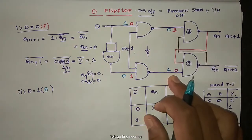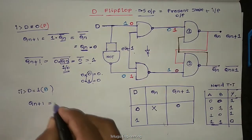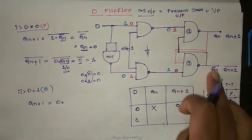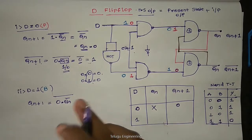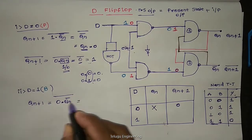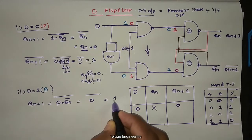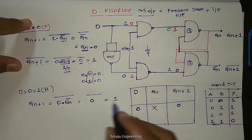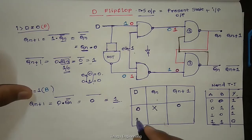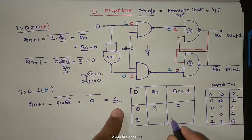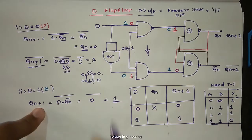Now find Qn+1. So Qn+1 equal to zero dot Qn bar, and zero. So Qn bar whole bar. Zero and again Qn bar, this is always equal to one. So Qn+1 value we got. Whenever D is 1, Qn+1 value is 1.